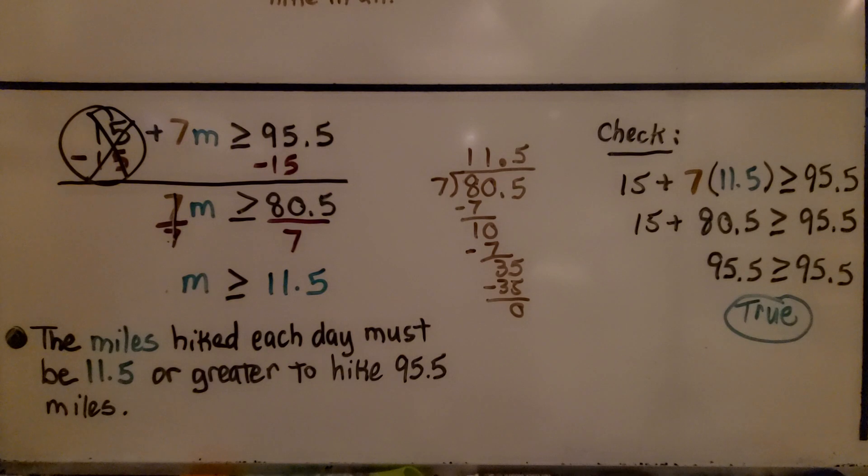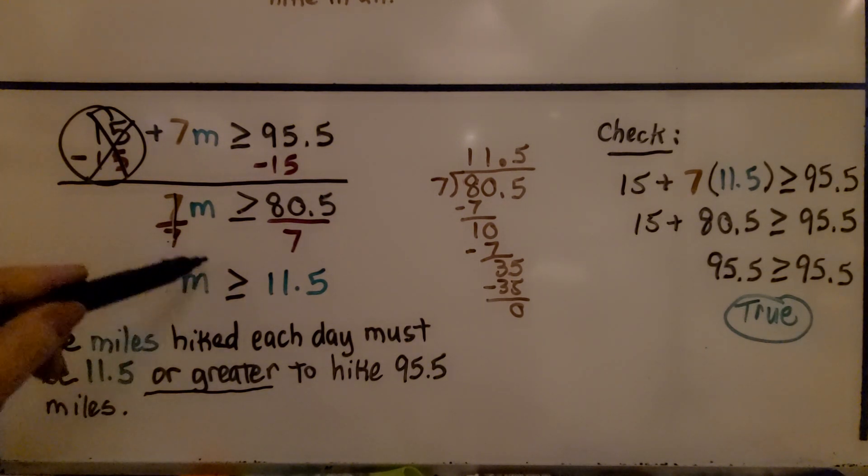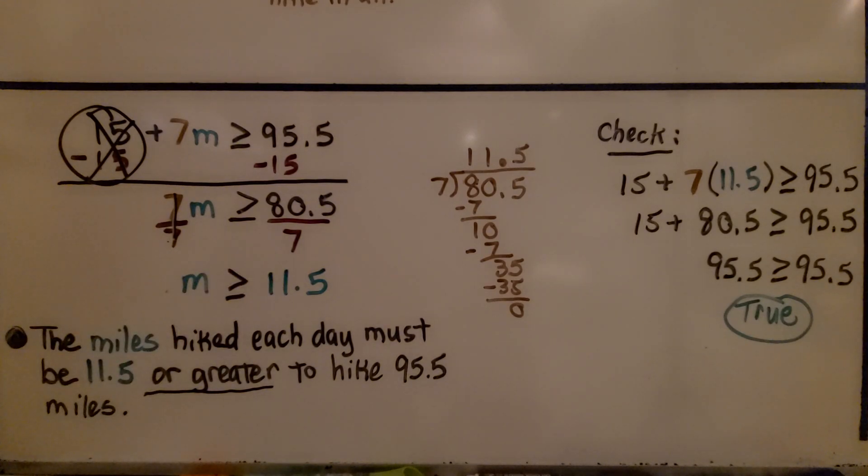That tells us the miles hiked each day must be 11 and 5 tenths or greater to hike 95 and 5 tenths miles in that seven days. So it needs to be or greater than that amount in order for them to reach this 95 and 5 tenths within that seven day period.